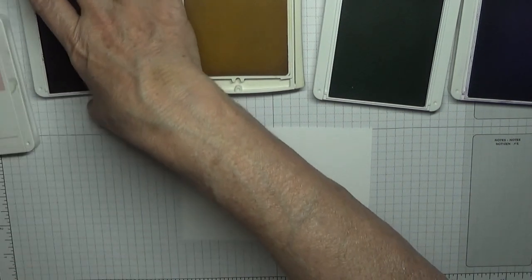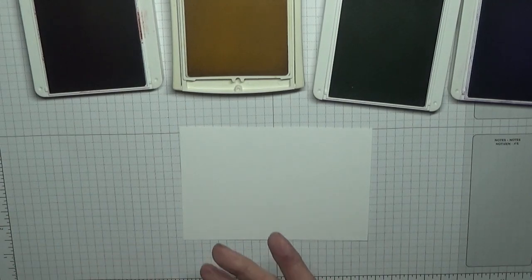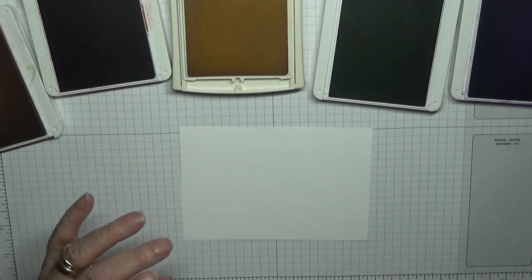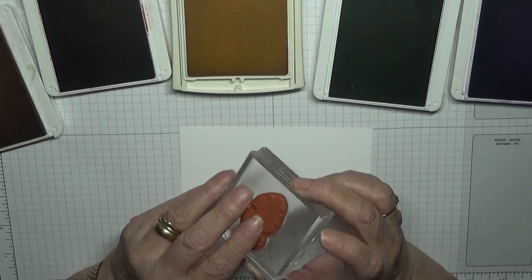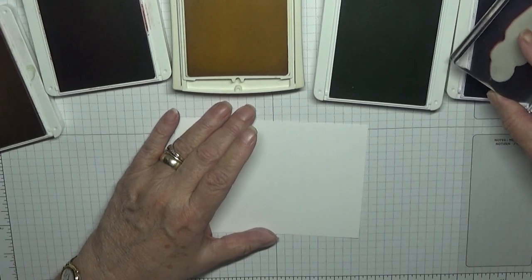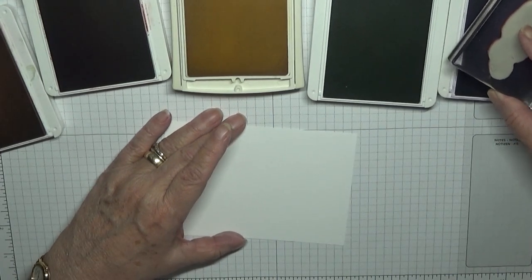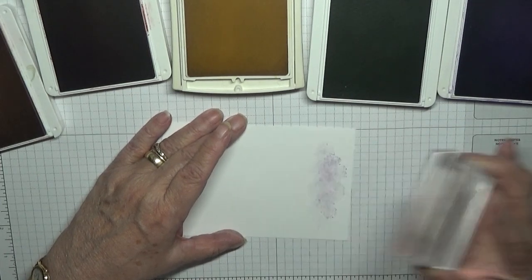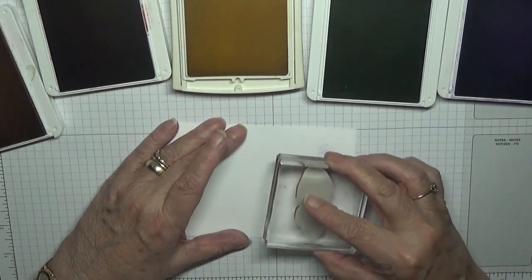You also want your cleaning cloth or stamp scrubber close at hand. So with the Label Me Bold stamp, all I did was ink it up in one color, stamp it down off and off again. Four stamps.